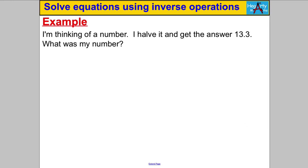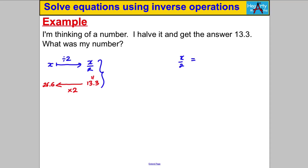Pause and have a go at this one. I'm thinking of a number X — I halve it, dividing by 2, to get the expression X over 2, and I know the answer is 13.3. To undo dividing by 2, I multiply by 2: 13.3 × 2 = 26.6, and that's my number. In algebra, X over 2 = 13.3; multiplying both sides by 2 gives X = 26.6.